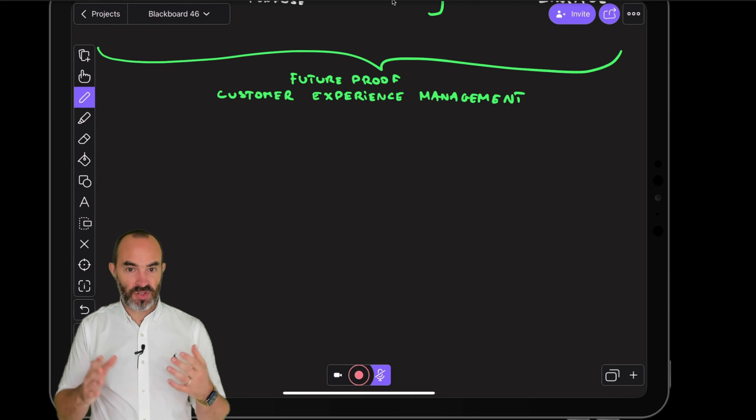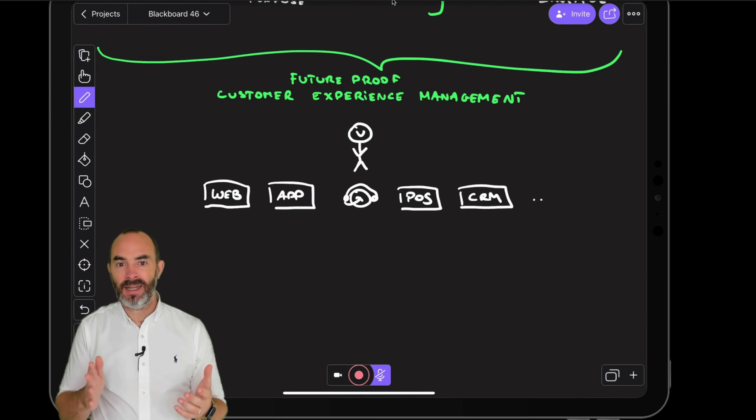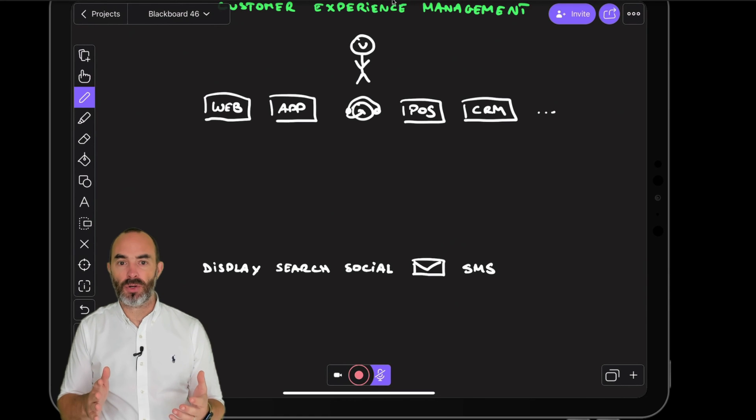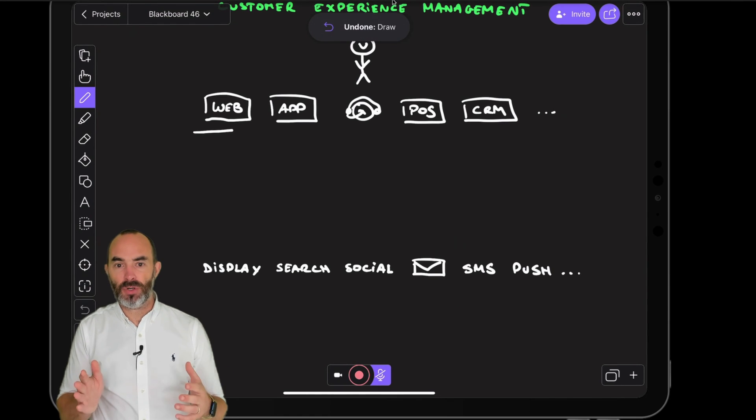Your customer interacts with you across channels like websites, mobile applications, call center, point of sales, CRM and many more and this same customer receives personalized communication across destinations like display, search, social, email, SMS, push and more.